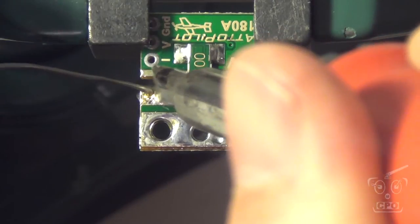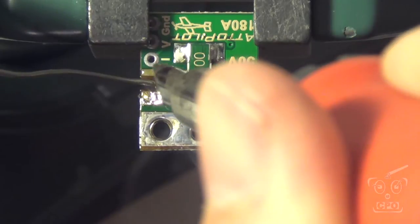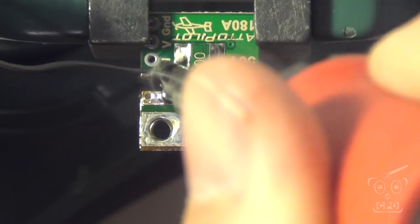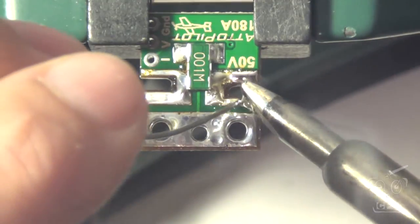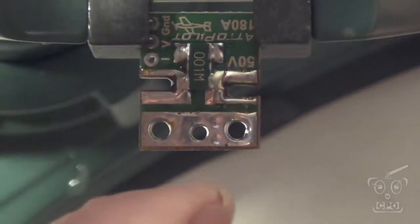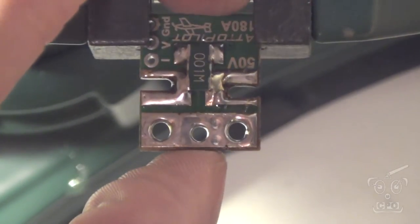The hard part about this, a couple things. Number one, it's very thick wire that I'm using, 10-gauge wire. And the other part is you want to make sure that you don't do any soldering that's going to bridge connections that shouldn't be bridged,